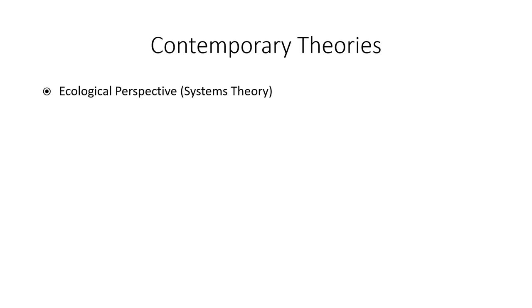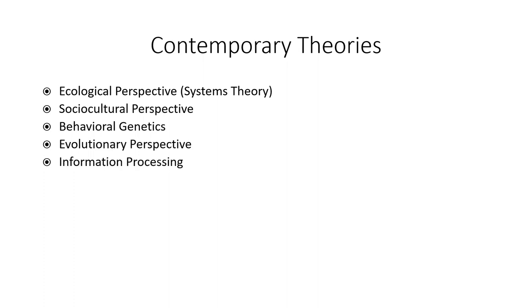Next are the contemporary theories. The contemporary theories we're going to talk about include: ecological systems theory, sociocultural perspective, behavioral genetics, evolutionary perspective, and information processing. These are the five main ones when it comes to development. There are many other contemporary theories people follow parts of, but these are the five main ones.